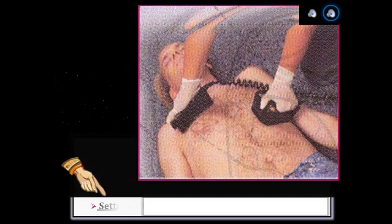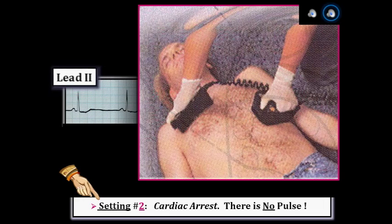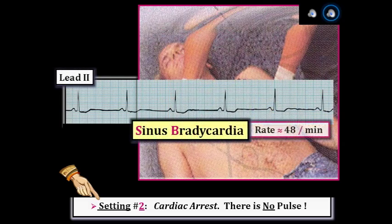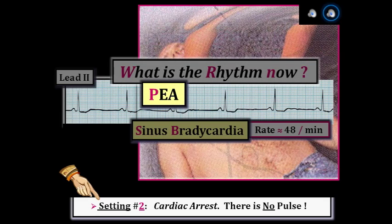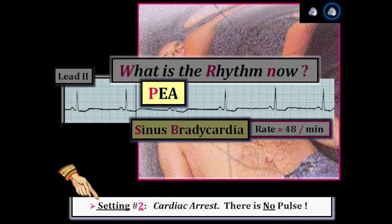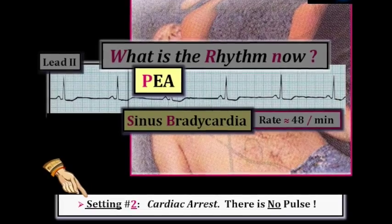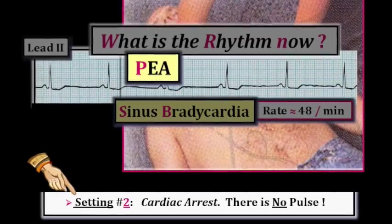On the other hand, what if the clinical setting was cardiac arrest with no pulse? Same rhythm on the monitor — sinus bradycardia at a rate just below 50 per minute — but the rhythm is now PEA, pulseless electrical activity, because we see an ECG rhythm on the monitor but there is no pulse. Same ECG rhythm, but a very different interpretation depending on the clinical scenario.